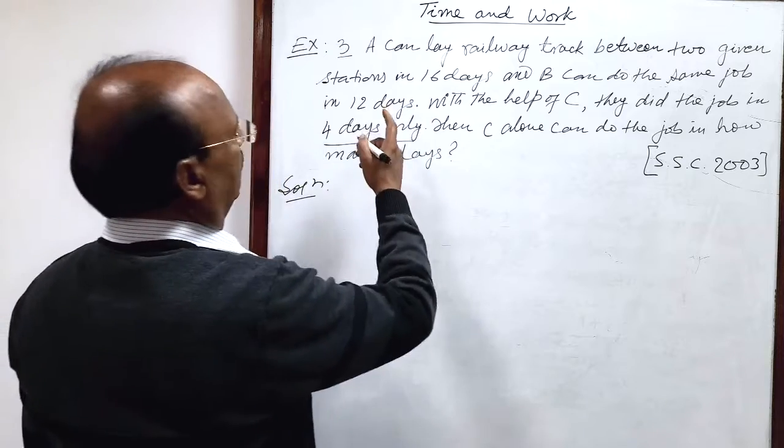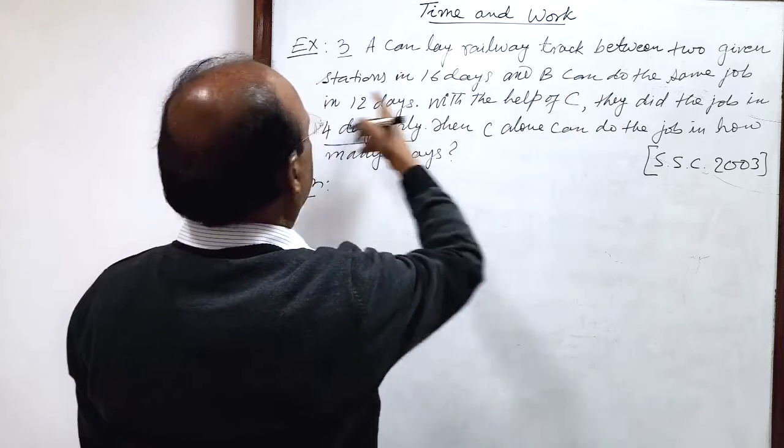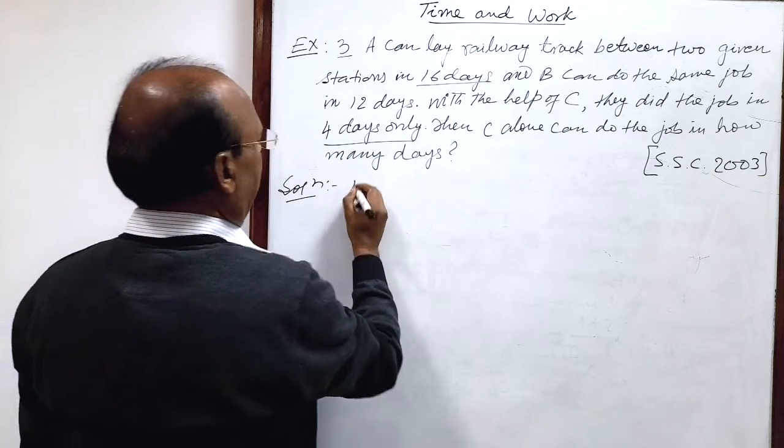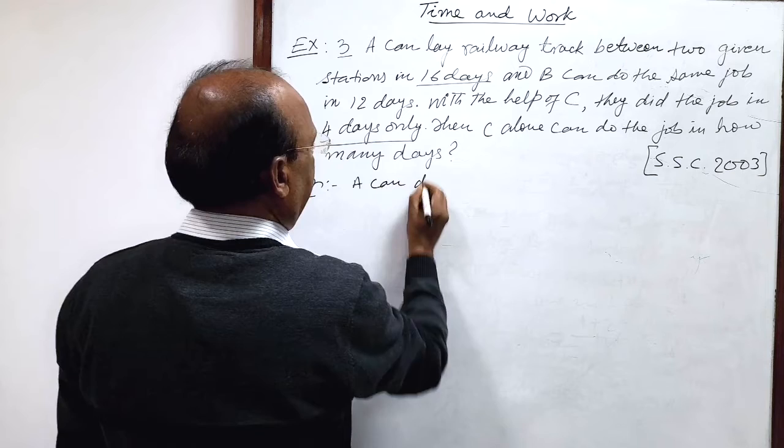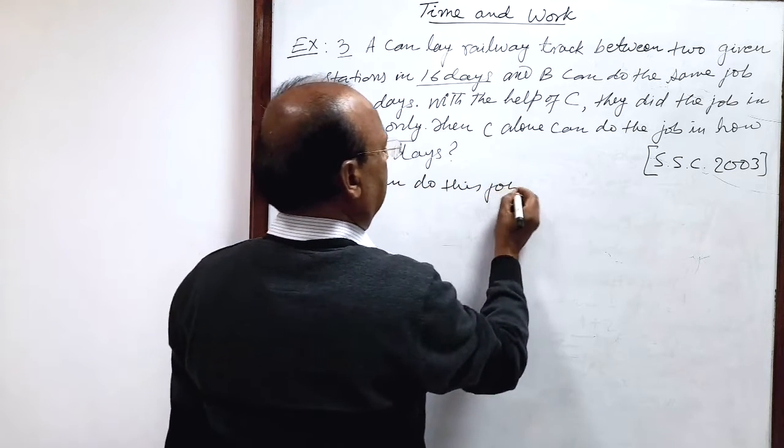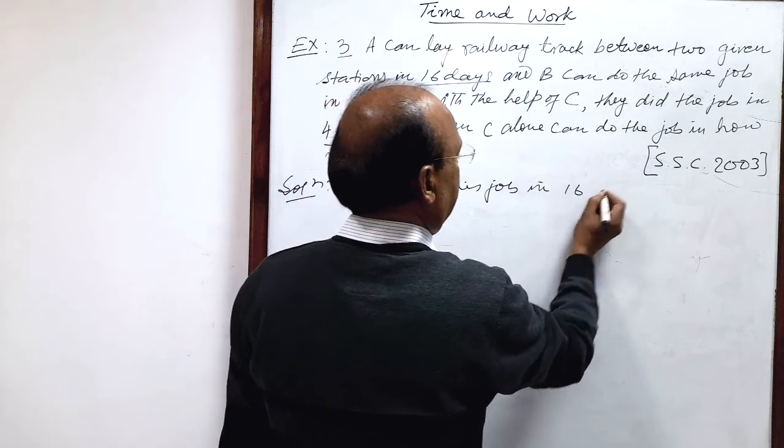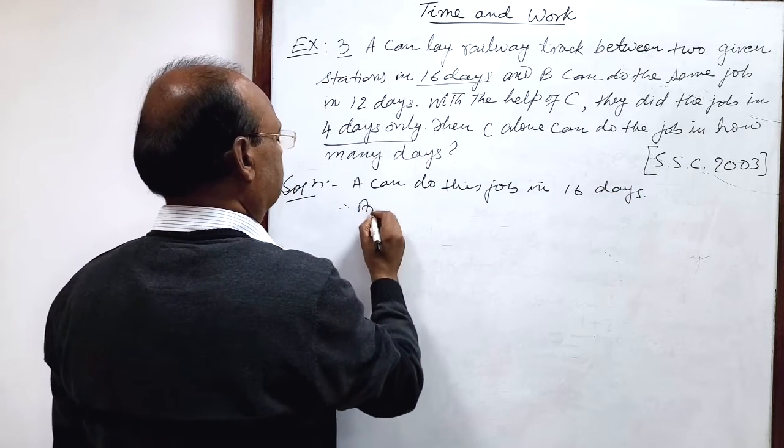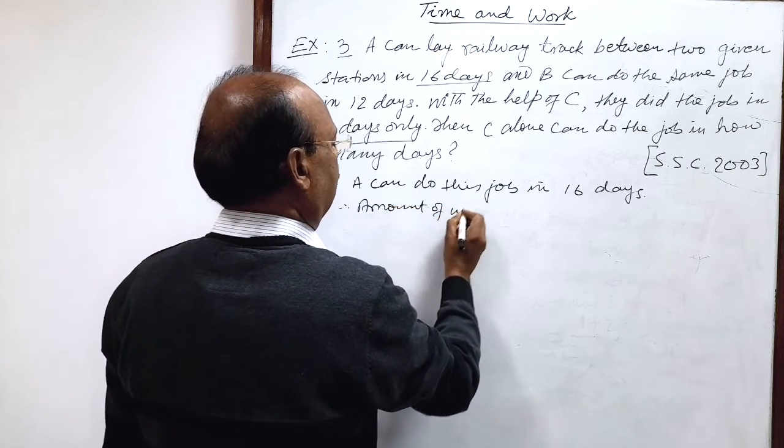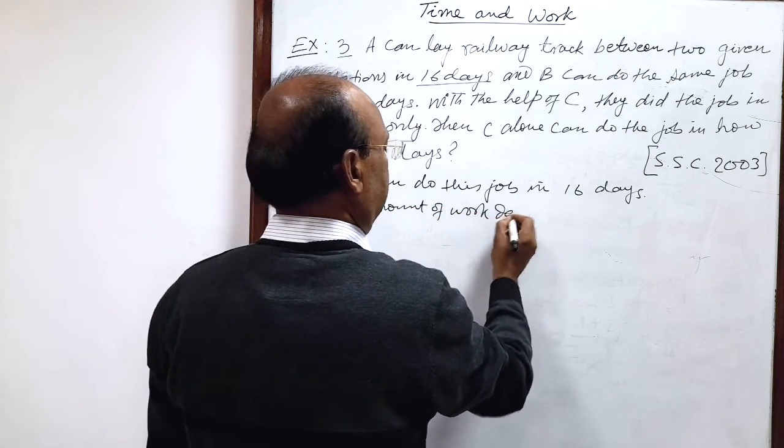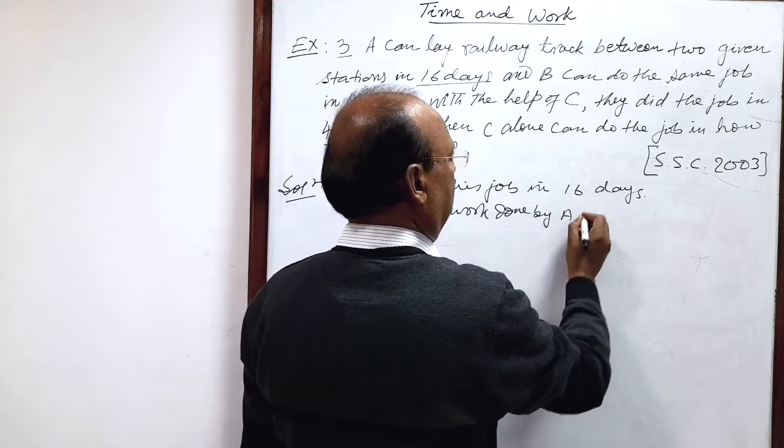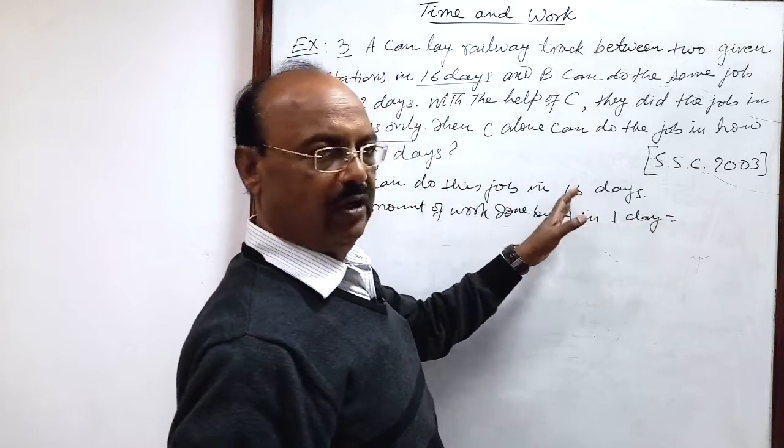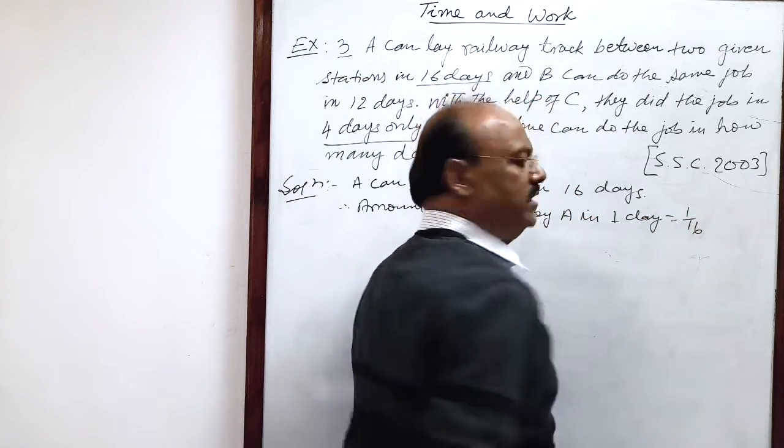So here given A can lay railway track between two given station in 16 days. So we can write that A can do this job in 16 days. Therefore, amount of work done by A in one day will be how much? Just reciprocal of 16 means 1 by 16.